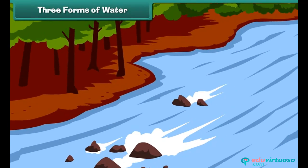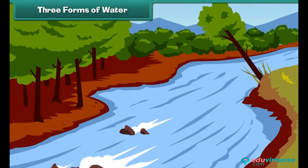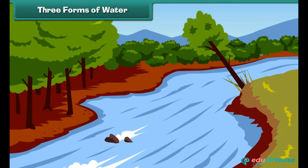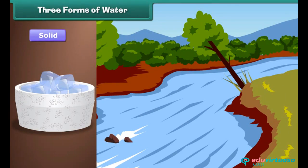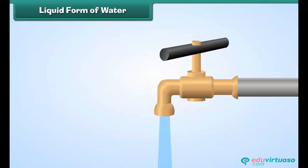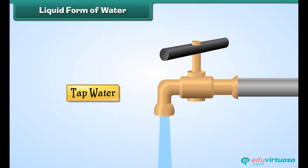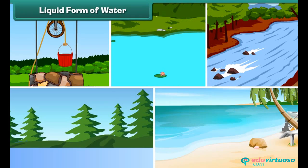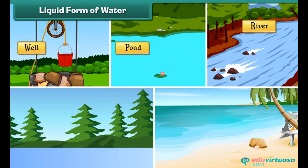There are three forms of water. They are solid, liquid, and gas. The water we get from taps is in liquid form. Other examples of water in liquid form are water found in wells, ponds, rivers, lakes, and oceans.